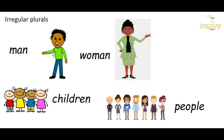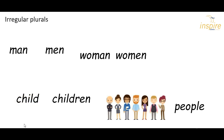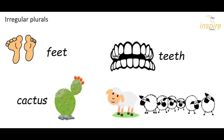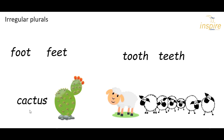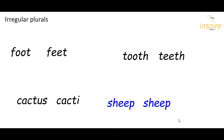One man becomes lots of men. One woman, which has the man in, becomes lots of women — we still have the men in, man and men. Lots of children — the singular would be one person. Two feet, or one foot. A mouthful of teeth, or one tooth. Cactus — one cactus, but lots of cacti. And one sheep, lots of sheep — the word doesn't change for the singular or the plural.